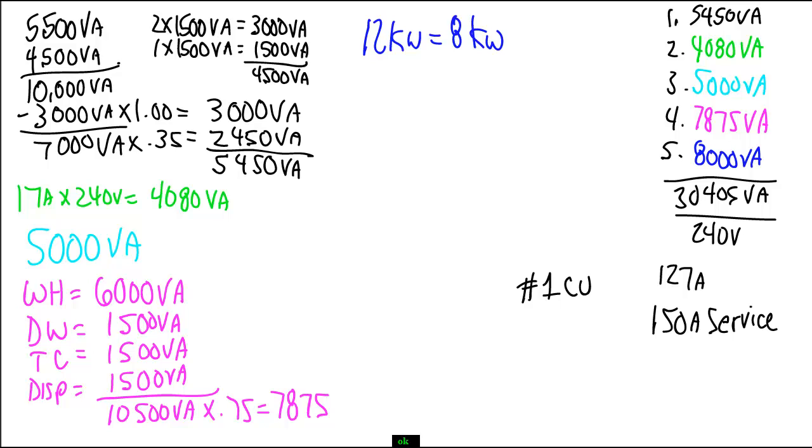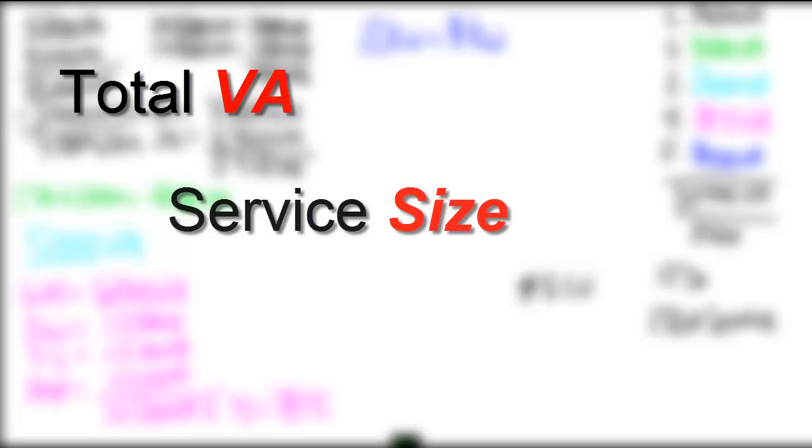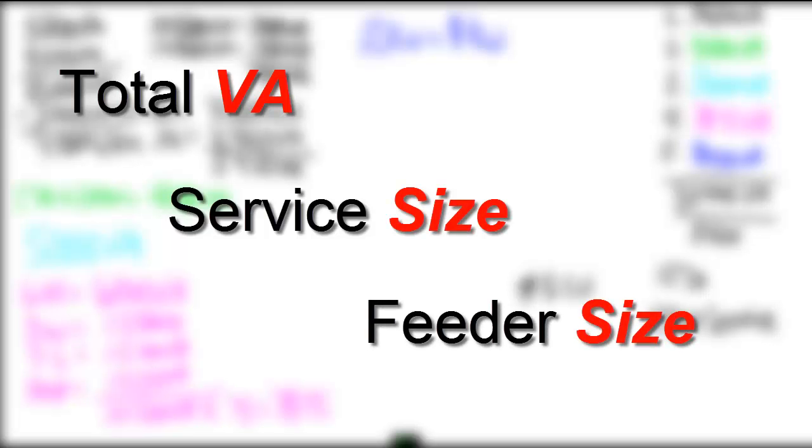So if you were doing this calculation for a test, what I would want to know from you is, what is the total VA for your residence that you calculated? What is the service size? And what size feeder conductor would you be using? I have all of that on this piece of paper right now.